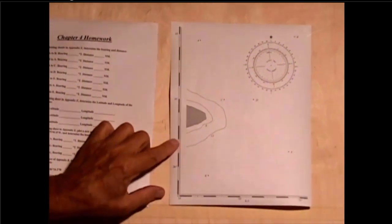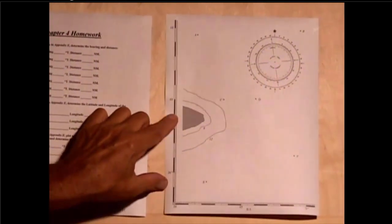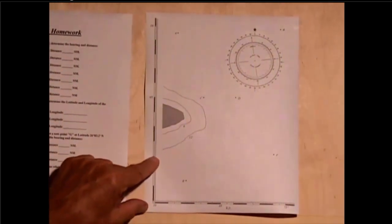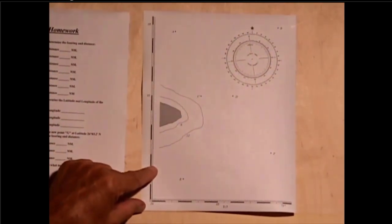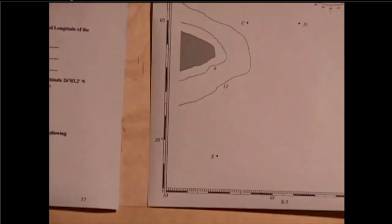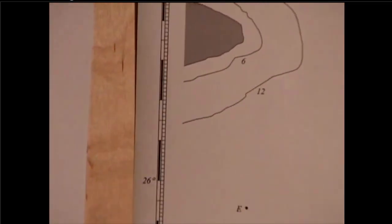Each of these major divisions is 1 minute of latitude, and then within that major division are 10 small ticks, and each of those ticks is therefore 1 tenth of a minute.